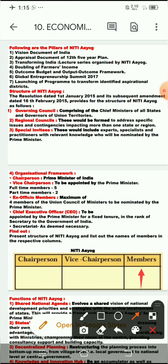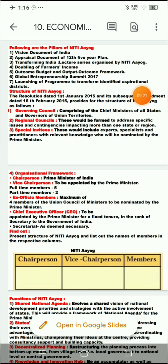After this comes the last part in the structure, which is the CEO — Chief Executive Officer. The Chief Executive Officer is appointed by the Prime Minister for a fixed tenure. In rank, this person is equivalent to a Secretary to the Government of India, and the CEO of Niti Ayog is considered the Secretariat. It is appointed by the government for a fixed period and is given the designation of Secretariat.